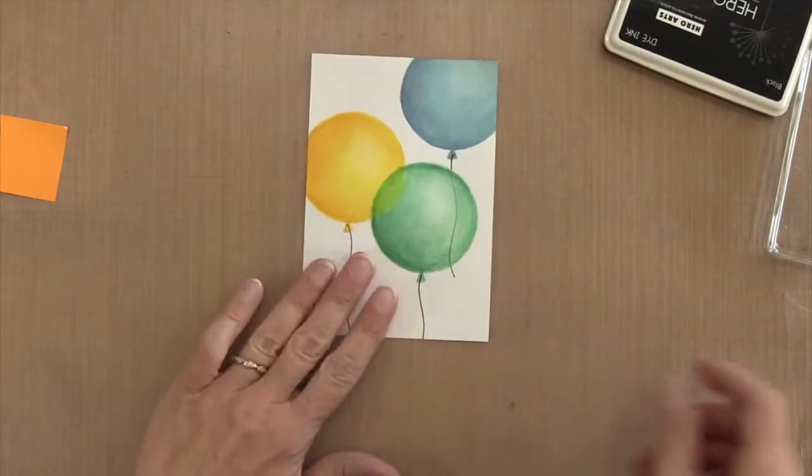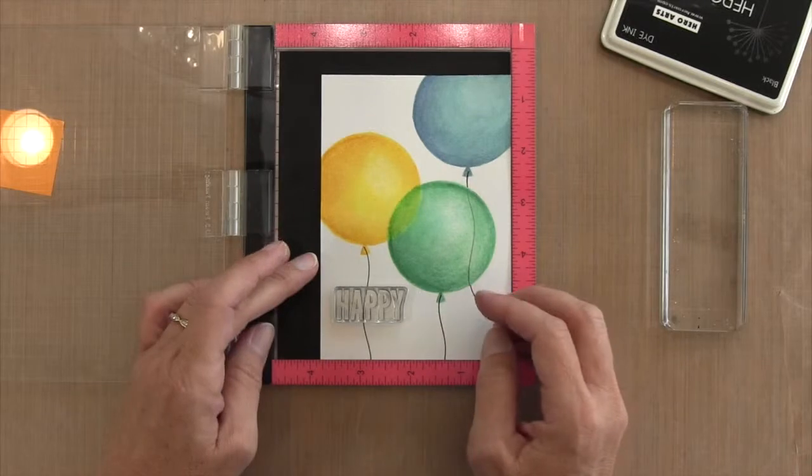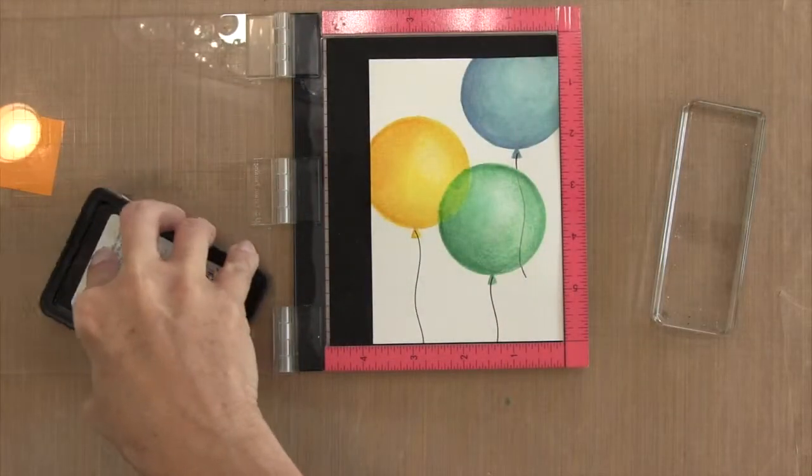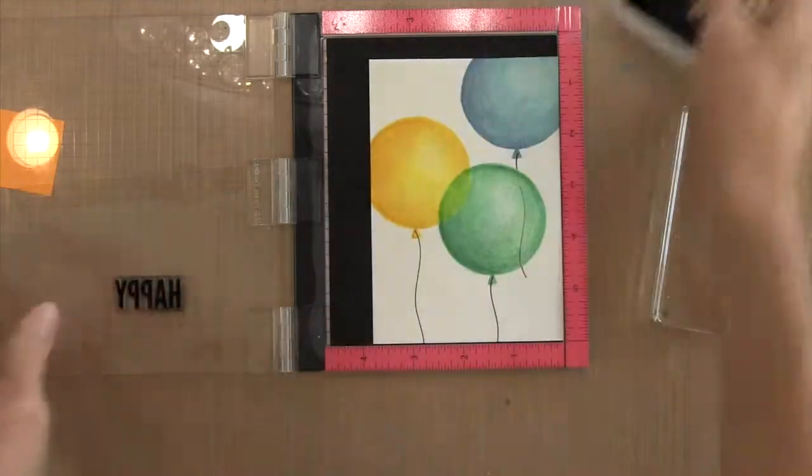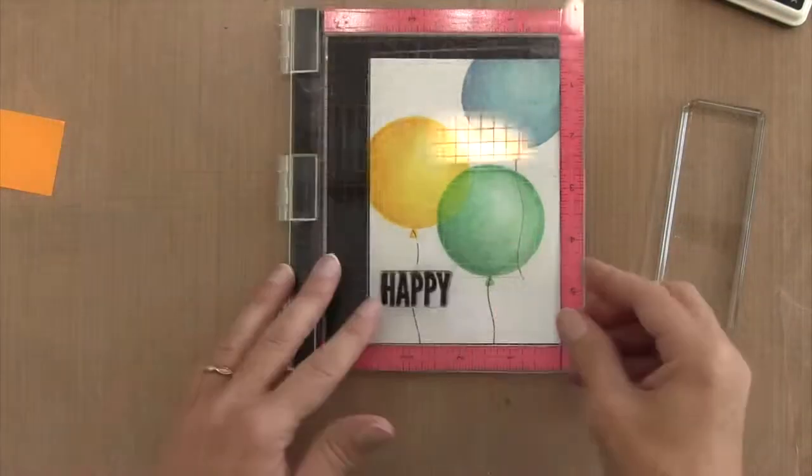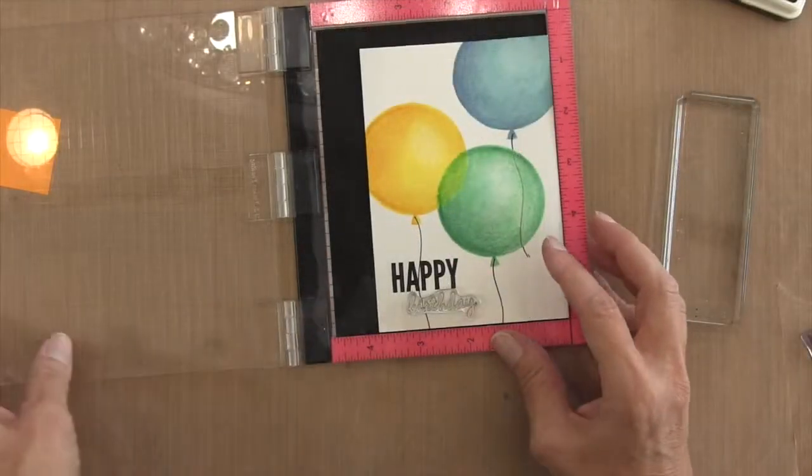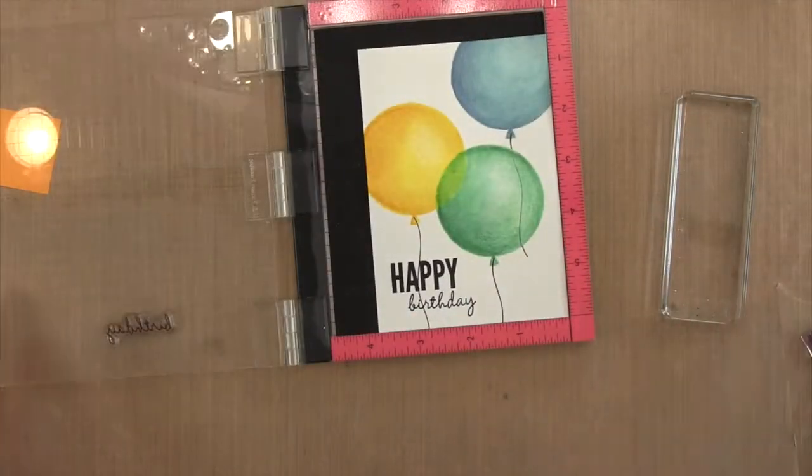Next I'm going to add my sentiments. I'm going to put the happy so that the string is going between the two letters. I'm going to ink that up with some Hero Arts ink which gives me a nice dark impression. Then I'm going to take the birthday part and I'm going to put it off to the right a little bit for something different.